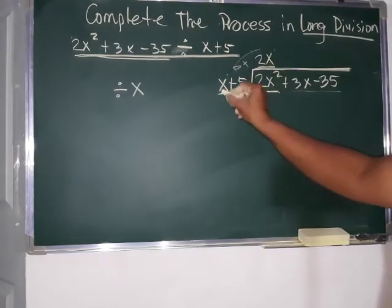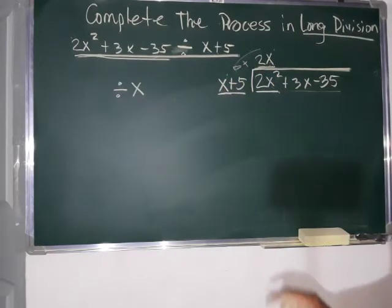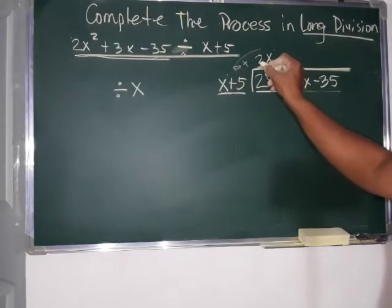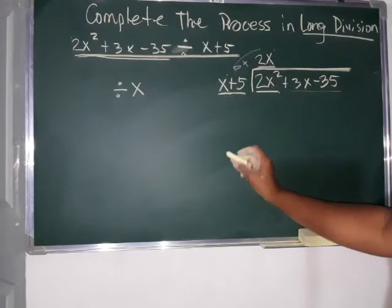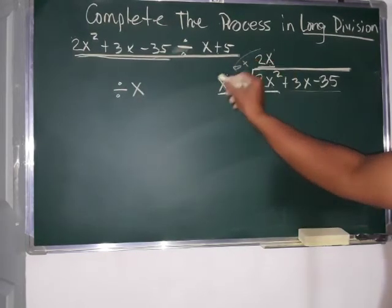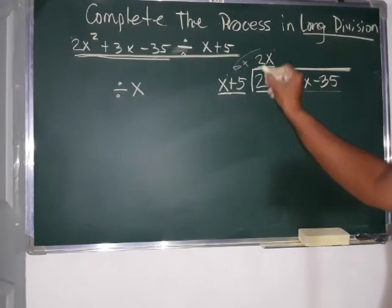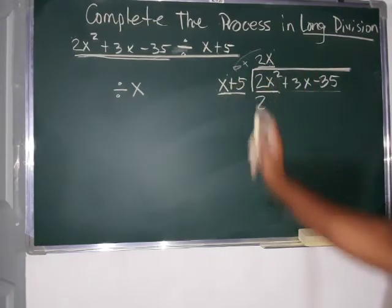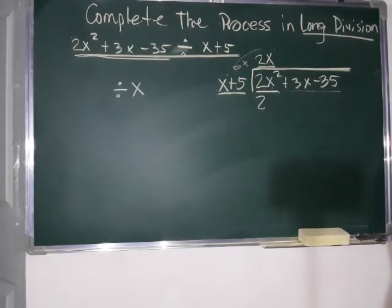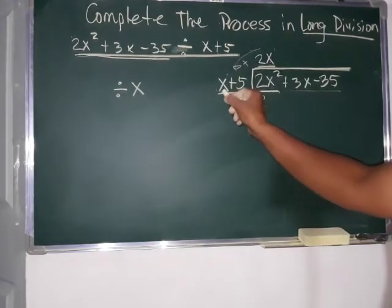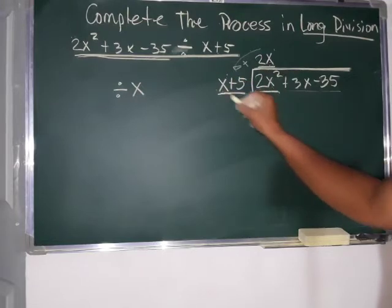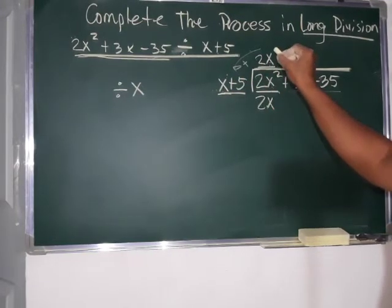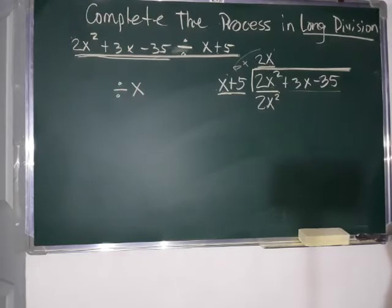Okay. So, 2x times x. Paano mag-multiply again? Number to number first. Or, if there's a sign, of course, sign mo na. Positive times positive. Positive. 2 times 1, 2. x times x. Paano mag-multiply ng variable? Add their exponent. And copy their variable. x times x. Copy x. And then, add the exponent. 1 plus 1 is 2.